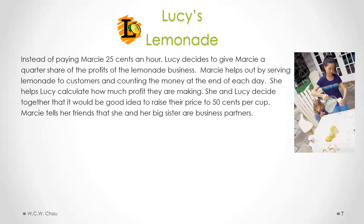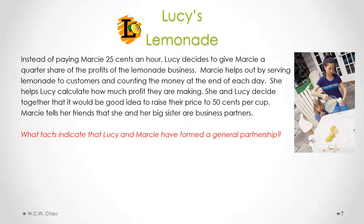Back to Lucy's Lemonade. Instead of paying Marcy $0.25 an hour, Lucy decides to give Marcy a quarter share of the profits of the lemonade business. Marcy helps out by serving lemonade to customers and counting the money at the end of each day. She helps Lucy calculate how much profit they are making. She and Lucy decide together to raise their price to $0.50 per cup. Marcy tells her friends that she and her big sister are business partners. What facts indicate that Lucy and Marcy have formed a general partnership? Please pause this video to consider this question.